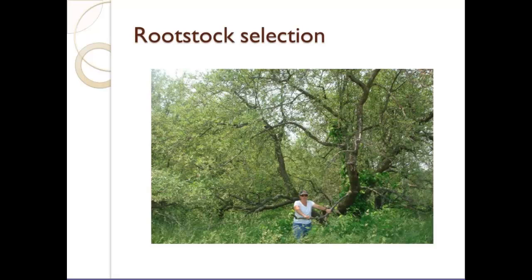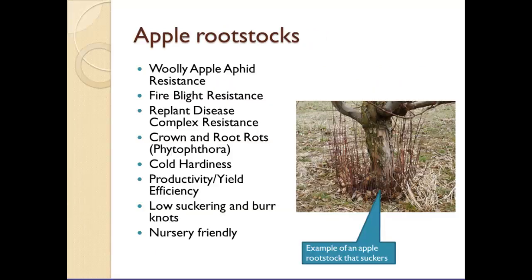Now let's talk about apple rootstock selection. Selecting a rootstock is just as important as selecting the cultivar you're going to harvest. This is a very important decision. Considerations include woolly apple aphid resistance, fire blight resistance, replant issues, soil diseases like Phytophthora, cold hardiness, precocity (whether it promotes early fruiting), suckering tendency, burr knots (which attract boring insects), and nursery friendliness. Some great new rootstocks may not be commercially available because they're difficult to propagate or graft.